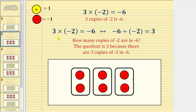The corresponding quotient for 3 times negative 2 equals negative 6 is negative 6 divided by negative 2 equals 3. Negative 6 divided by negative 2 is asking: how many copies of negative 2 are in negative 6? The quotient is 3 because there are 3 copies of negative 2 in negative 6, which we can see from the model below.